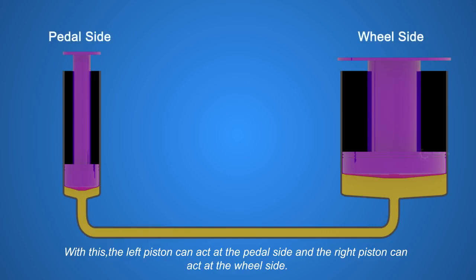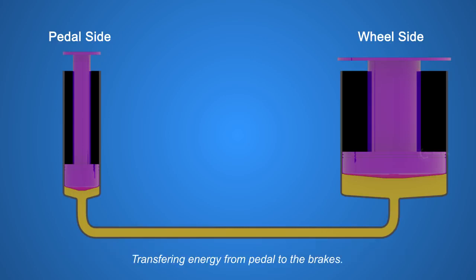With this, the left piston can act at the pedal side, and the right piston can act at the wheel side, transferring energy from pedal to the brakes. Now we know the theory, let's see how this works in real.